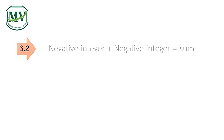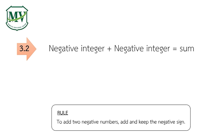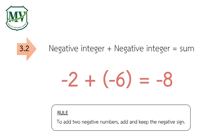Negative integer plus negative integer equals sum. Your answers may vary. Define the sum of two negative integers: add the numbers and keep the same sign. For example, negative 2 plus negative 6 equals negative 8.